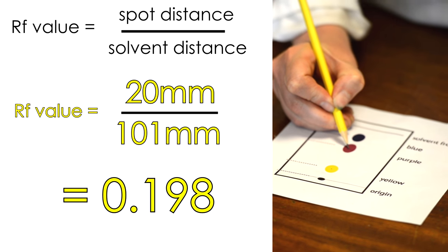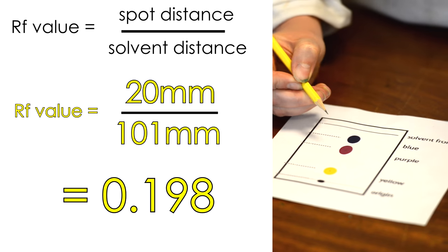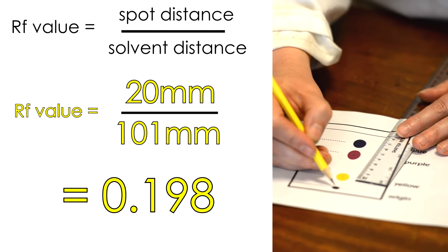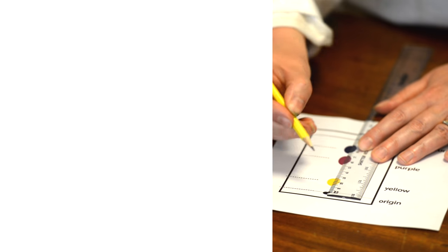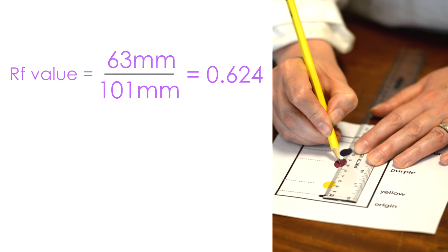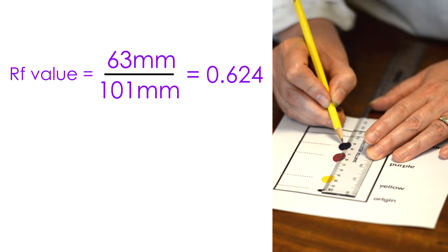You can do the same for your purple and your blue and get a separate measure of RF for each of your colors. So that one is 63, this one is 85.